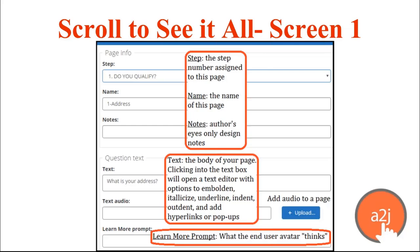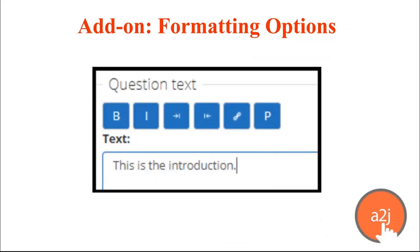At the very bottom of the question text section is the Learn More prompt. The Learn More prompt is what the end user avatar thinks — the question your end user has that your guide avatar can reply to. When you click into any text section, you'll get formatting options: embolden, italicize, indent, outdent, and the ability to add a hyperlink and a pop-up.